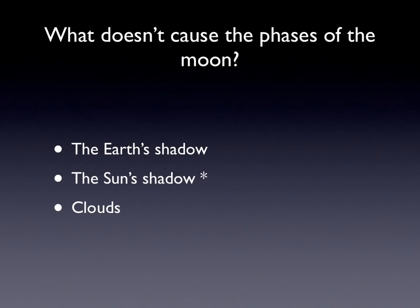What doesn't cause the phases of the moon? These are the most common incorrect answers. A lot of people say the Earth's shadow — they know the Earth and moon are moving around and they see shadows, so that's their first guess. Some people say the Sun's shadow, and others suggest clouds or something obscuring the moon.